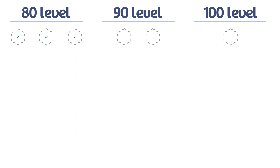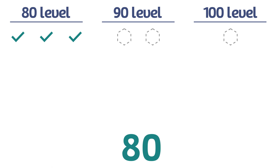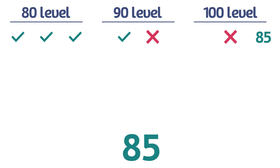Case 1: Students get all three 80-level questions correct. In this scenario, we know the student will earn at least an 80 because they have shown proficient understanding. Now it depends on how they do on the 90 and 100-level questions. If students get one 90-level question correct and the rest incorrect, they receive an 85. Students need to get both 90-levels correct to reach the 90-level range, but if they get one correct, they've shown that they are more than proficient. Therefore, I give them the middle score between 80 and 90.